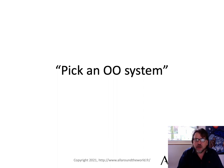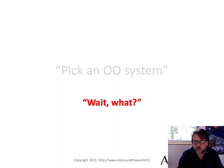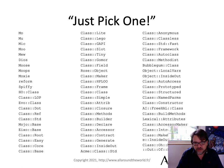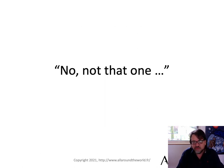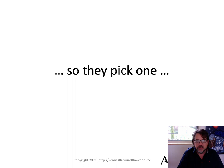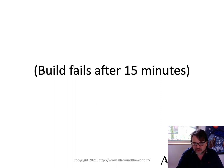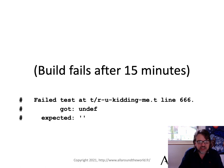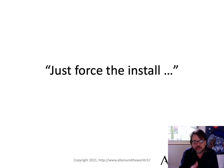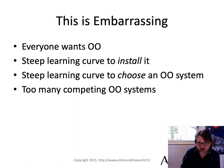Then you have to pick an object-oriented system. Wait — what do you mean I have to pick one? We tell them to choose, then say no, don't choose the ones they actually chose. So you tell them Moose or Moo or something like that, and then the build fails after 15 minutes because you're getting an obscure error message, like you got an undefined instead of an empty string. What does that even mean? And then you tell the developer, 'just force the install.' And that's awful.